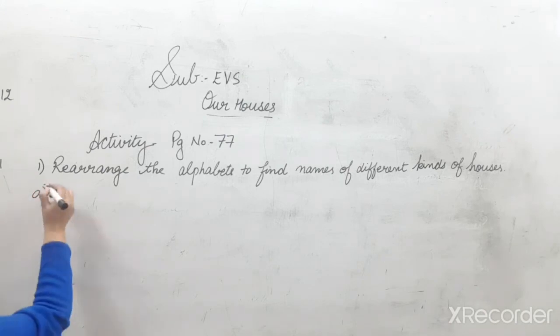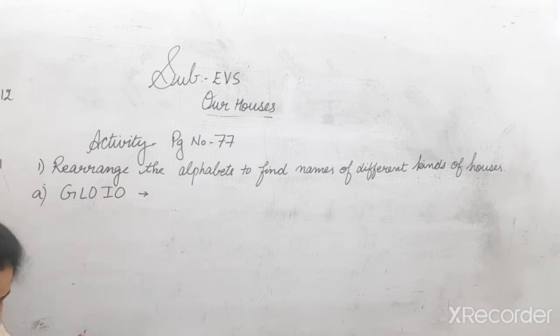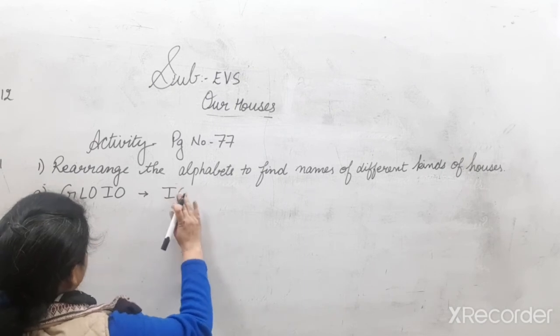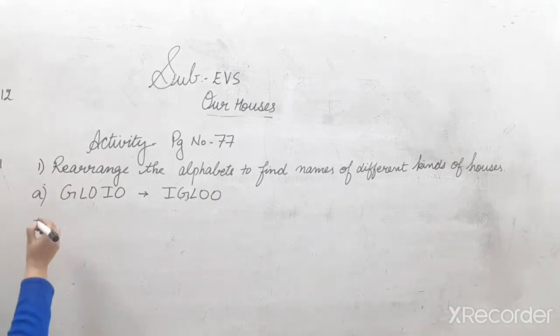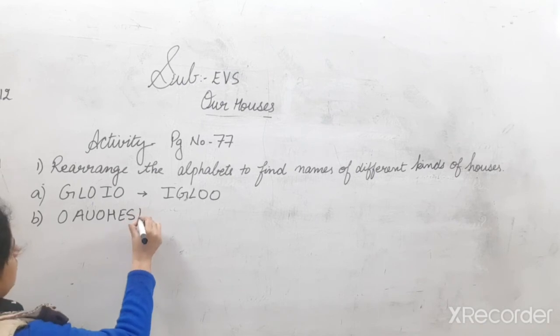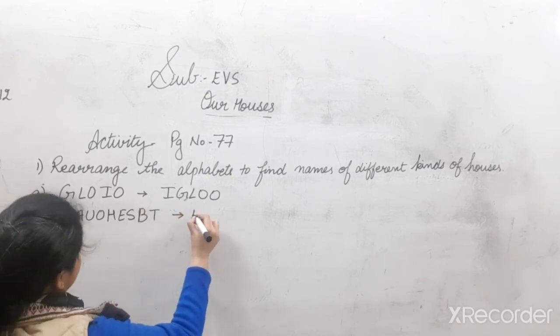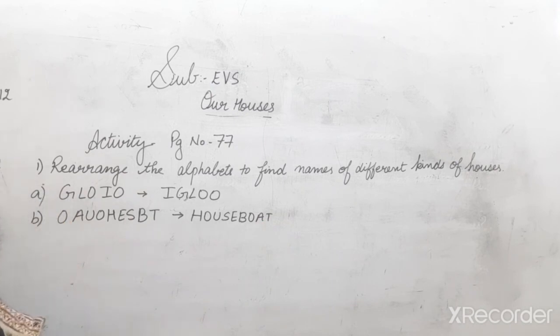First one is G, L, O, I, O. So after arranging, what it will come? I, G, L, O, O. Igloo. B, O, A, U, O, H, E, S, B, T. So what is the answer? H, O, U, S, E, house, B, O, A, T, houseboat.